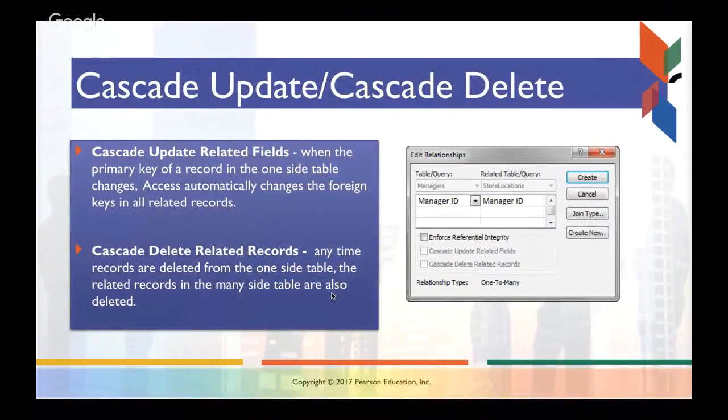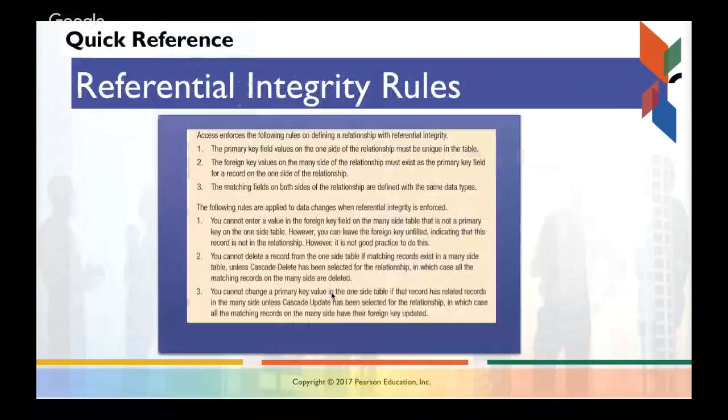So cascading, updating, and cascading, deleting is an additional measure of enforcement. Meaning that when I update data in my tables, it enforces referential integrity. And then when I delete, it can actually delete associated records to make sure your database has stayed clean. There may be times when you want to do this, there may be other times when you don't. And we'll talk a bunch about that in your exercises.